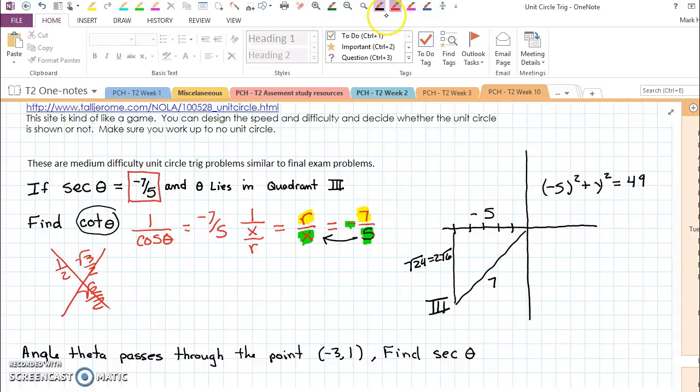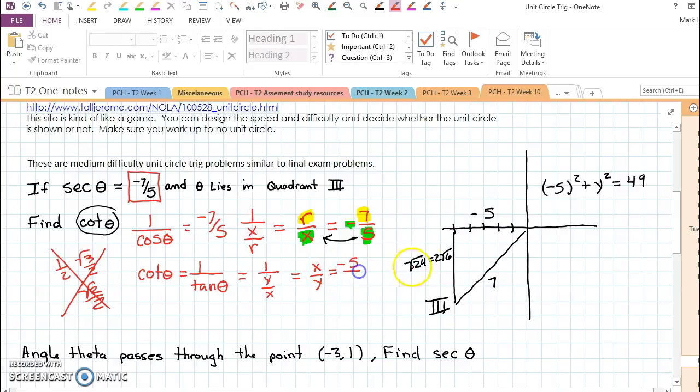Cotangent is the reciprocal of tangent. So we're looking for the reciprocal of y over x, which is x over y. So now we just need the x, negative 5, and the y, 2 radical 6. That's also a negative. Two negatives make a positive. And when I rationalize my denominator, my final answer is 5 radical 6 over 6.